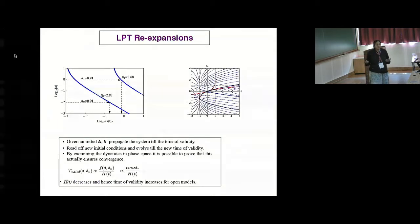So how do we fix this problem? The idea is analogous to analytic continuation. So you say that given an initial delta and theta, you propagate the system till the time of validity. You read off the new initial conditions, read off your new initial delta and theta, and keep taking steps. So you treat LPT as a finite difference scheme, not as a single step scheme. And the question is, does this LPT re-expansion actually allow you to overcome not the shell crossing, but the convergence problems?